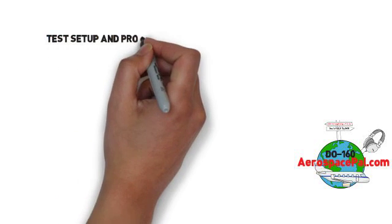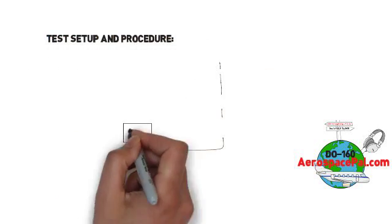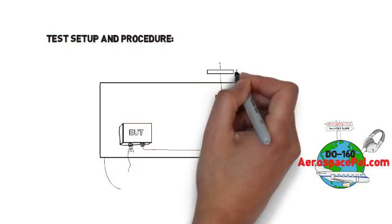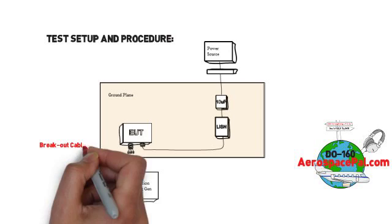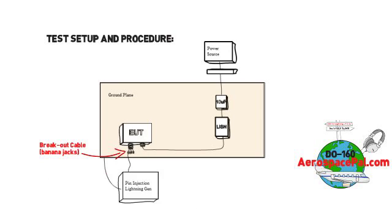The test setup for pin injection is real simple. You'll need a breakout cable that exposes all your aircraft pin connections to preferably banana jacks. This should be less than 5 centimeters long.